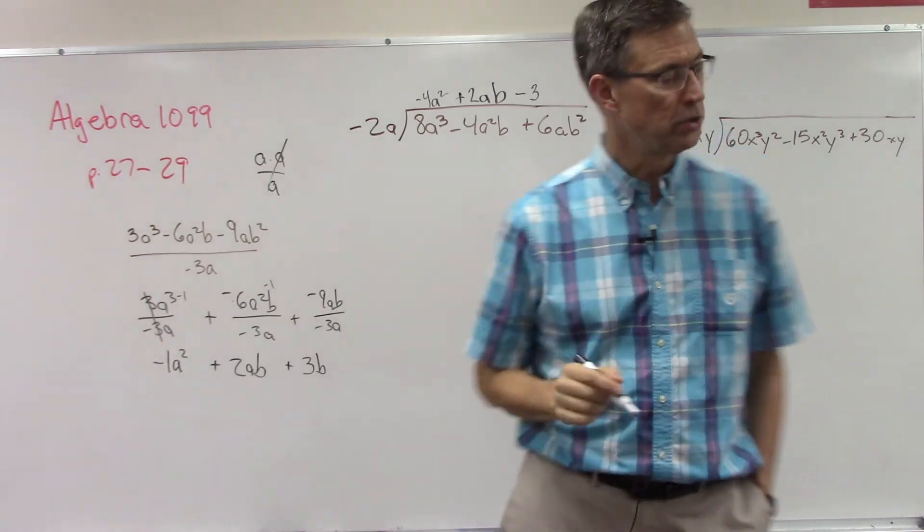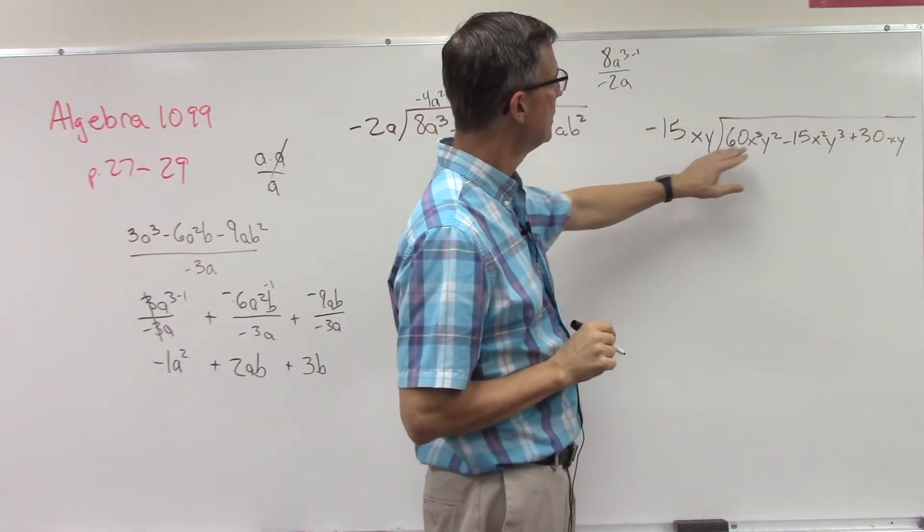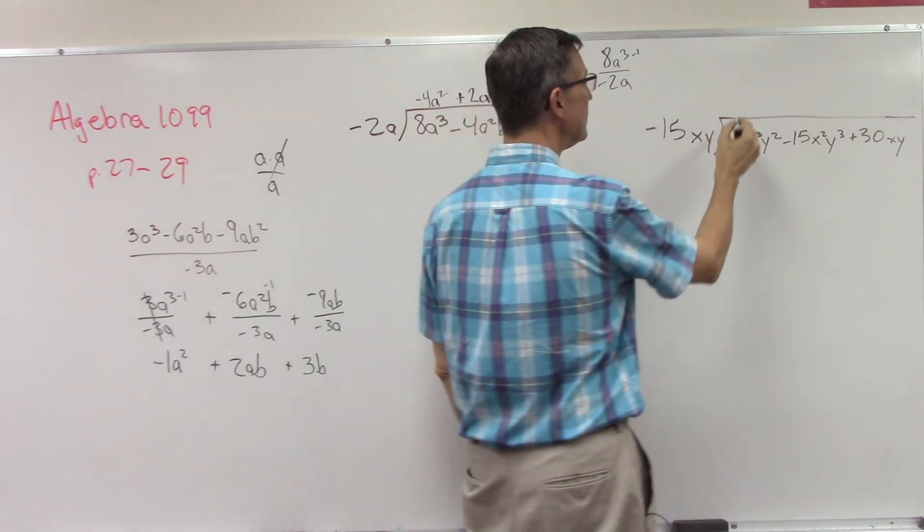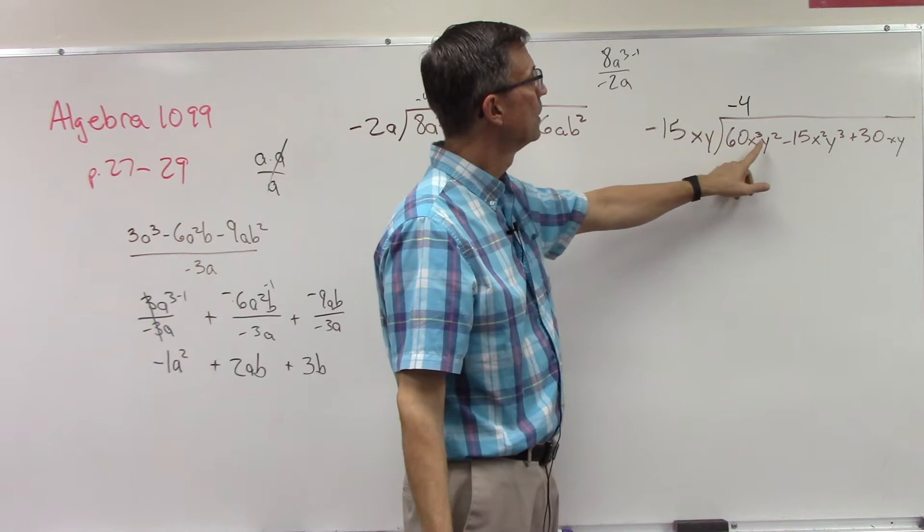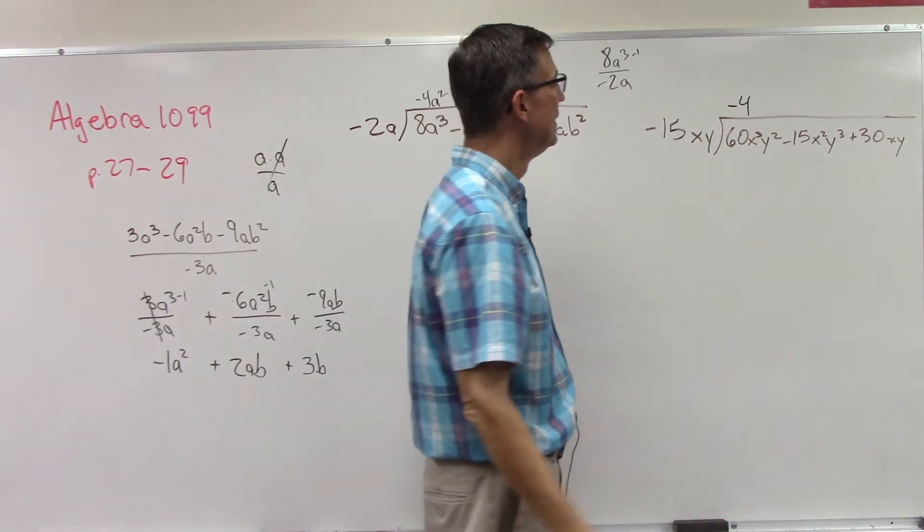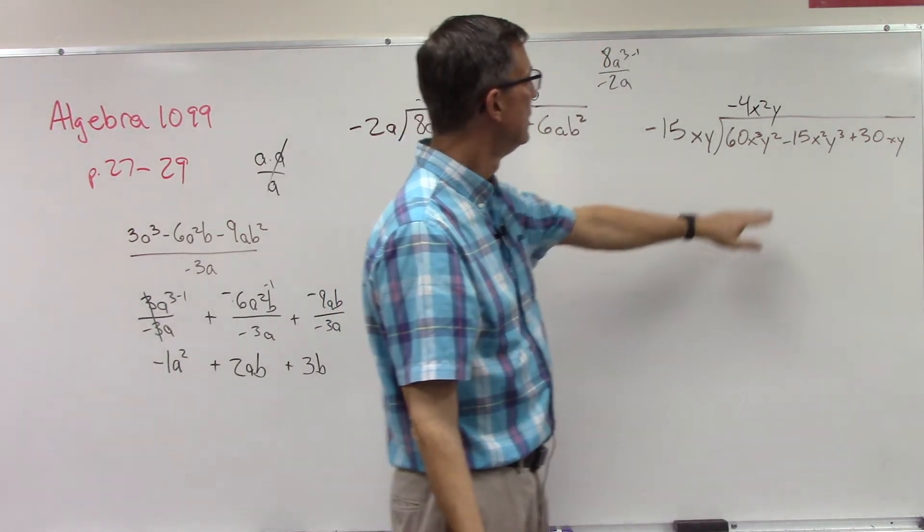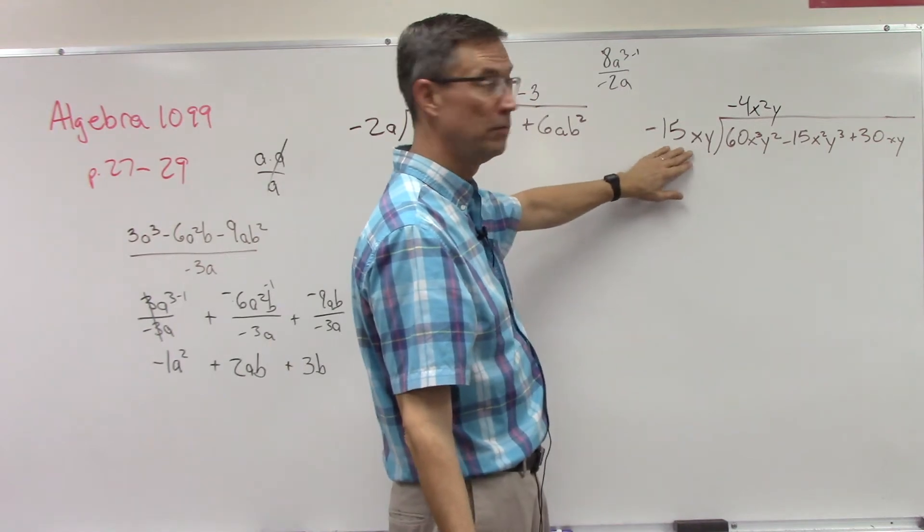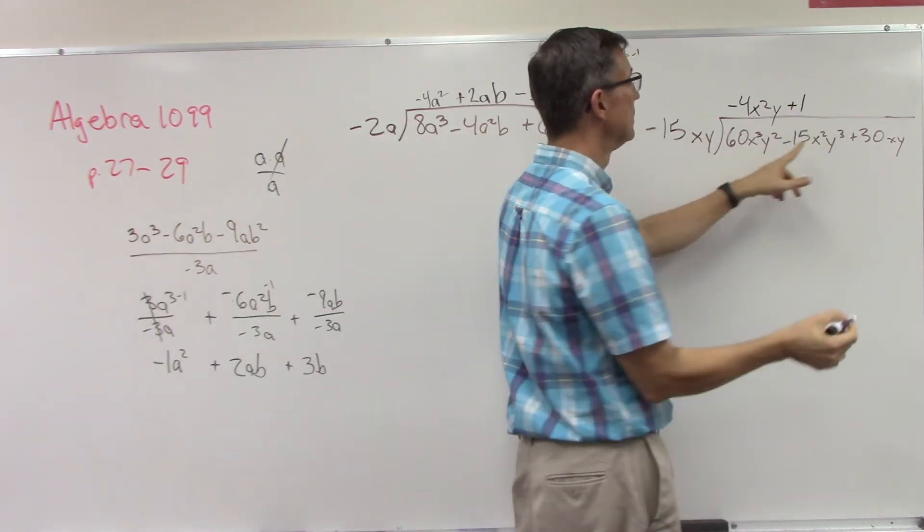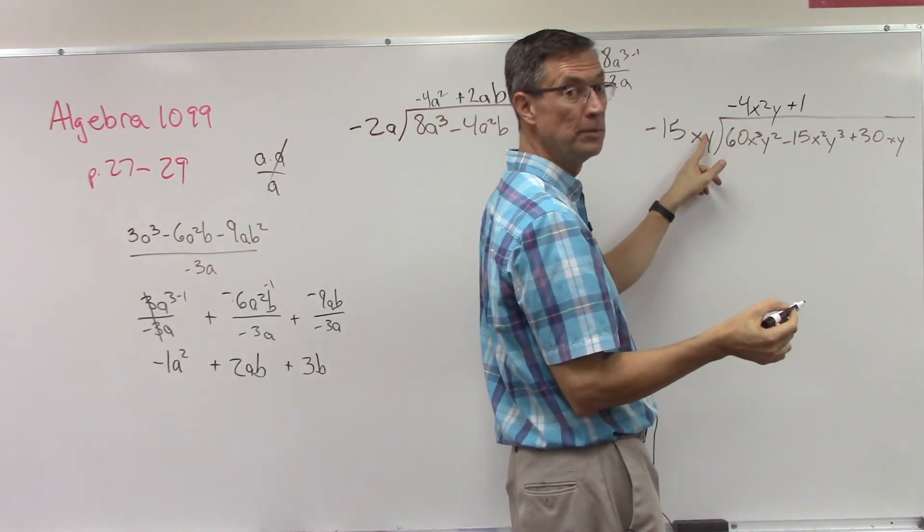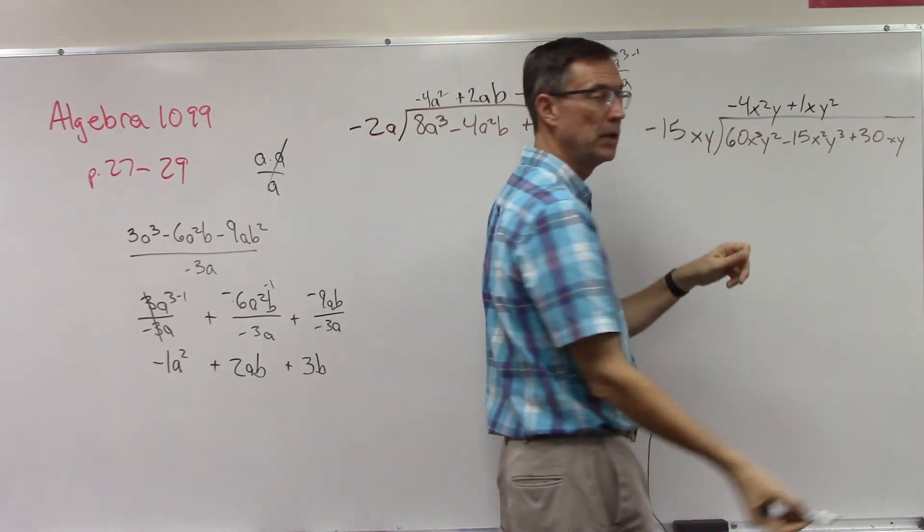Let's do this one. Oh wow, this looks complicated, doesn't it? Well it's not as bad as it looks. Let's start by taking the 60 and divide by negative 15, and that would give us negative 4. 15 times 4 is 60. The x to the third divided by x, we're going to subtract the exponents, 6 minus, or 3, 3 minus 1 would give me x squared, 2 minus 1, 1. Negative 15x squared y to the third divide by this, well 15 divided by 15 is 1, negative divided by negative, positive. Subtract the exponents when we're dividing, so 2 minus the invisible 1, x, y to the third minus y to the 1, y squared.